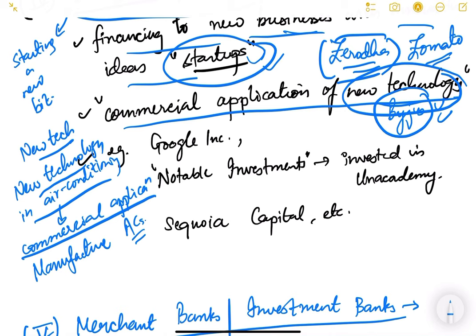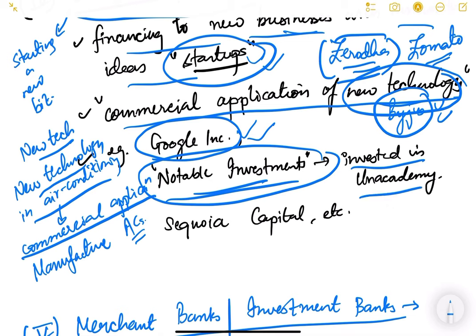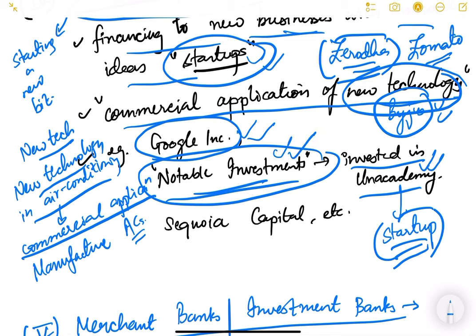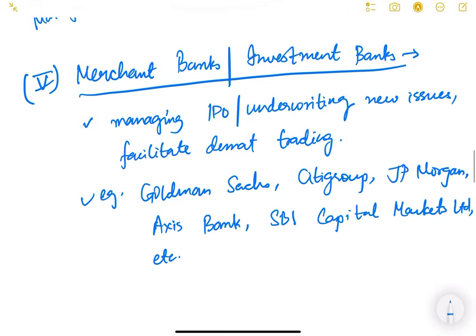Examples of venture capital companies include Google Inc., which funds new startups. Notable Investments is a company that invested in Unacademy — a startup famous for UPSC preparation started by very knowledgeable people. Another example is Sequoia Capital, which is also a venture capital company.